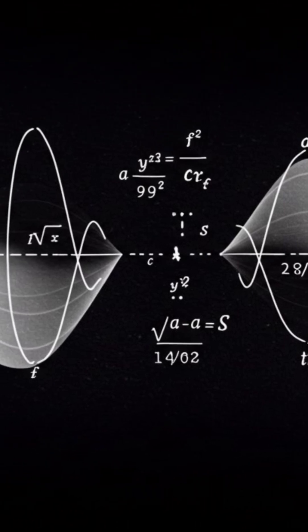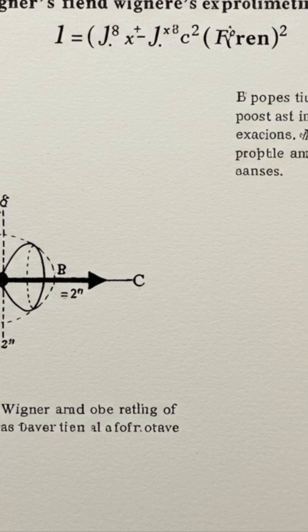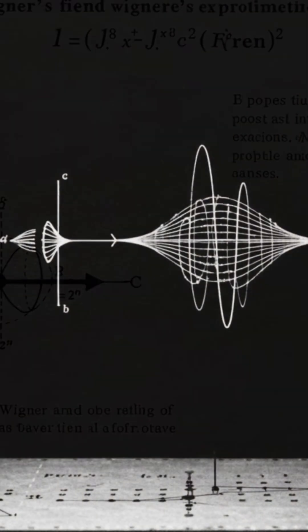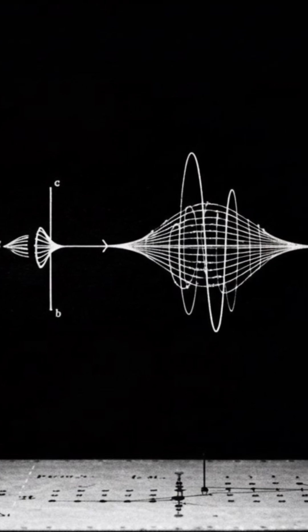Imagine a friend is inside a sealed laboratory. Inside the lab there is a quantum system, such as an atom, that is in a superposition of states. For example, it is simultaneously in an excited and a ground state.